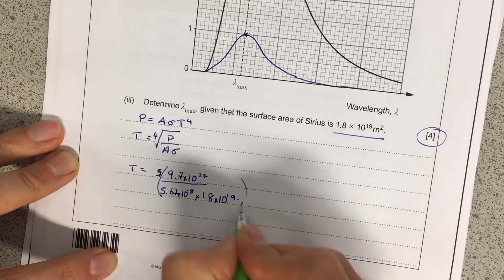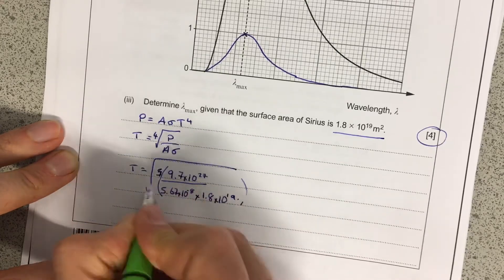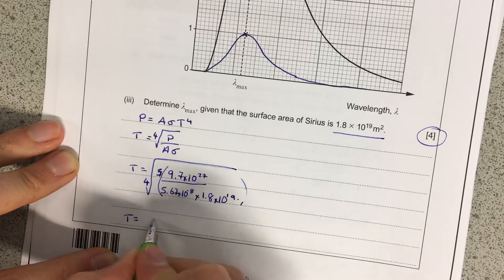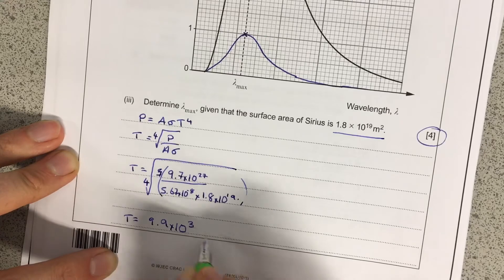OK, so all that goes into brackets. And then there's a magic button on your calculator that will do the fourth root for you. And that will give you temperature equal to 9.9 times 10 to the 3 Kelvin.